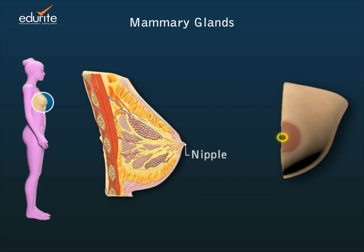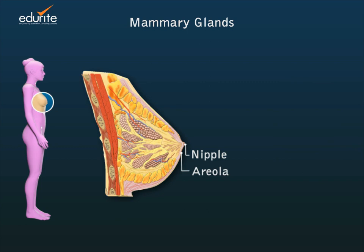The surface of a mammary gland has a projection called the nipple, which is surrounded by a circular pigmented area called the areola.